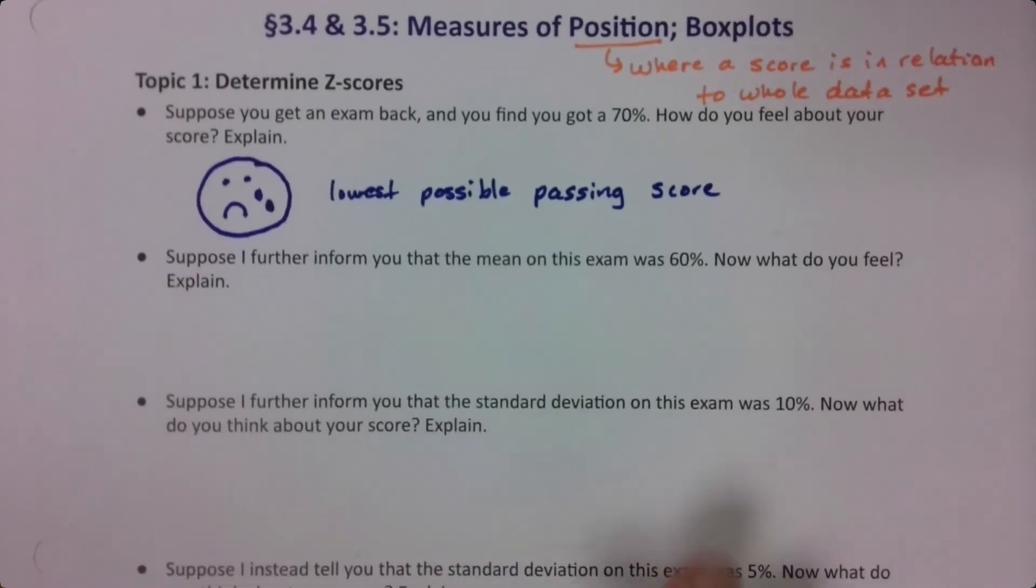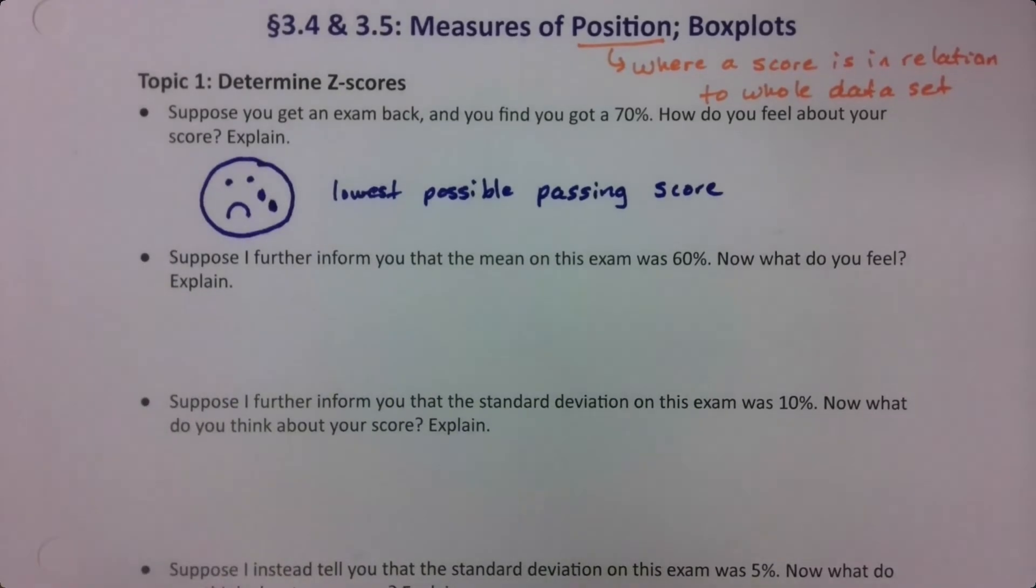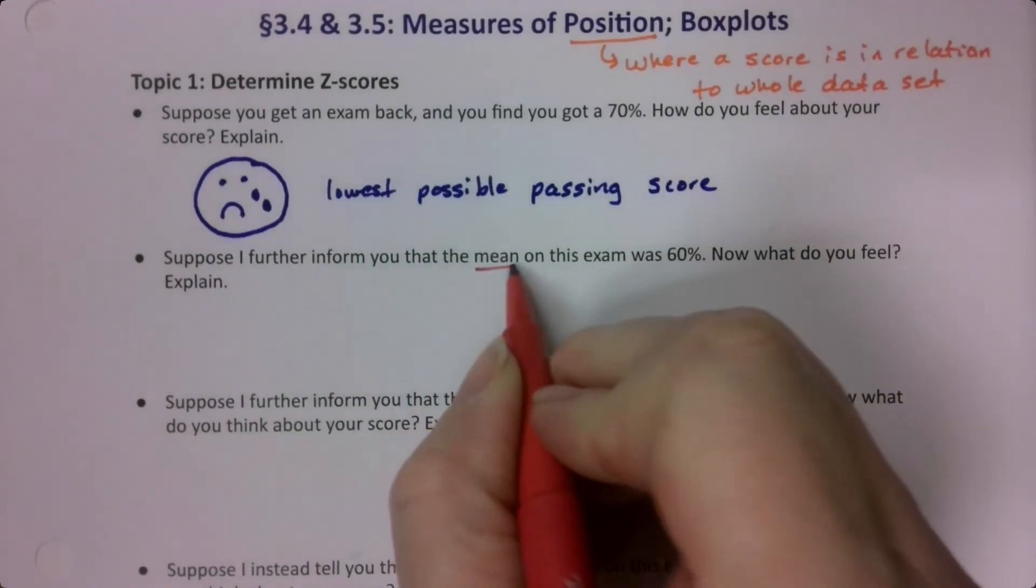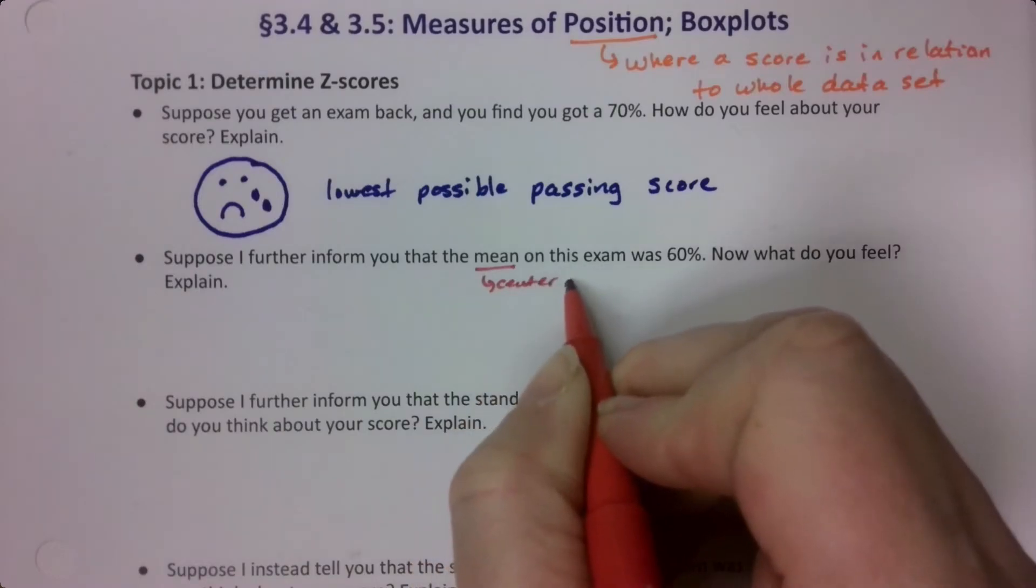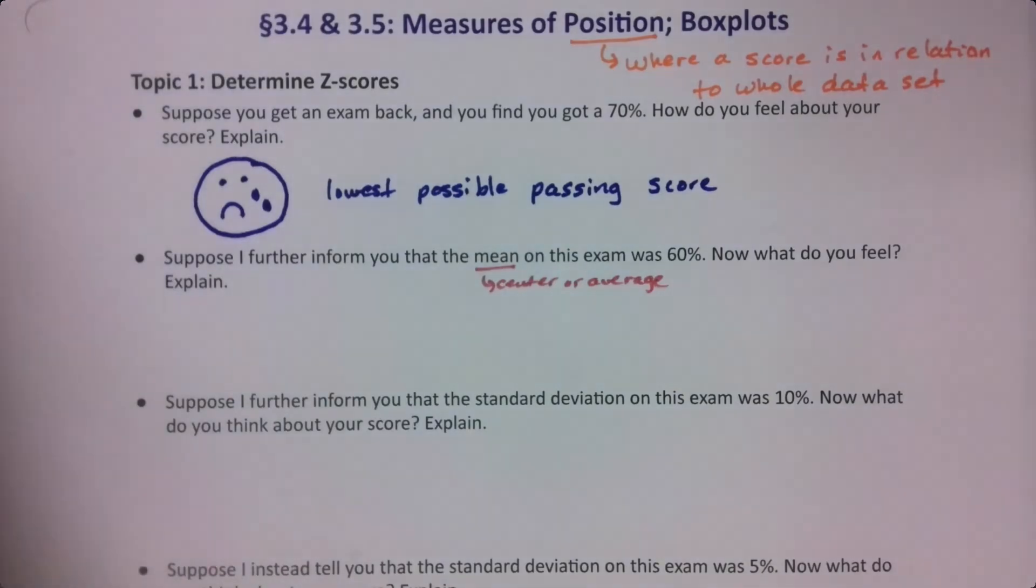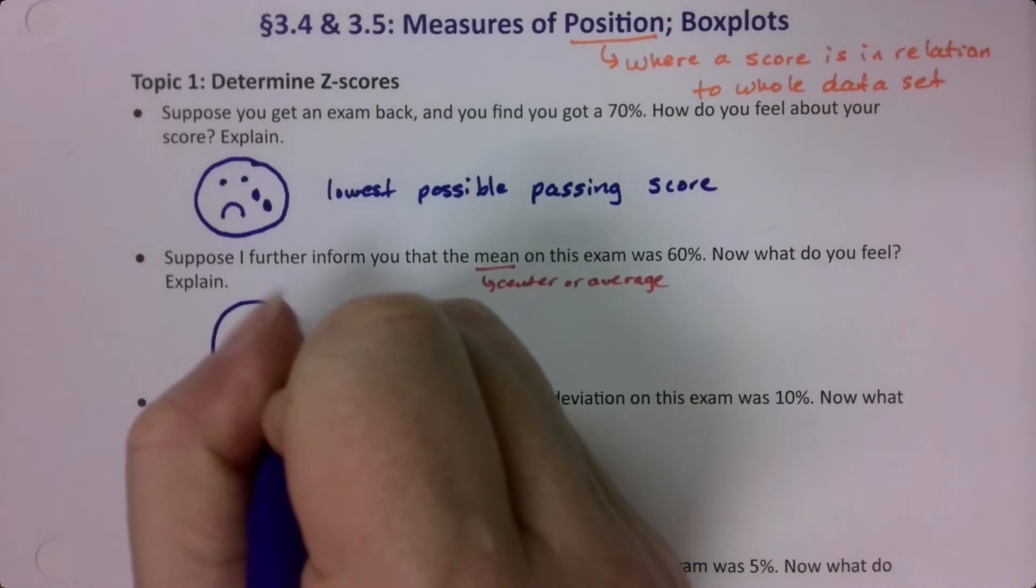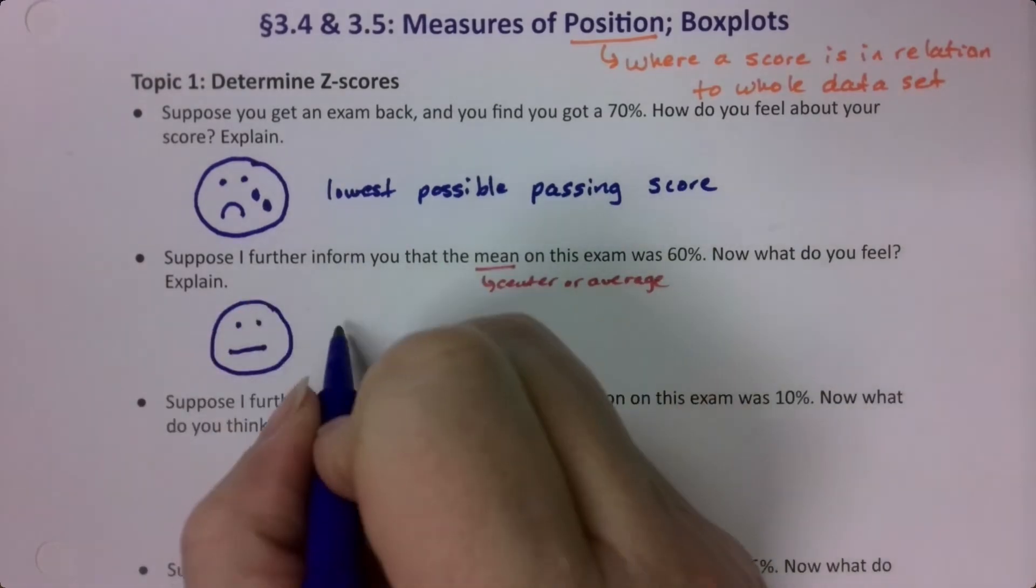Now suppose I further inform you that the mean - remember mean is the average, one of the averages, the center - is 60 percent. Well now how do you feel? Well, feel a little better, right? Because you think you did better than about half the class, because if the mean is the center, then at least you know you did better than half the class.